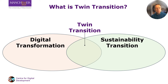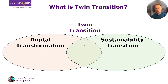The twin transition model integrates two previously separate trends: digital transformation and the sustainability transition. The agenda's core idea is that digital tools, when combined with sustainable practices, can more effectively support socio-economic and environmental resilience.